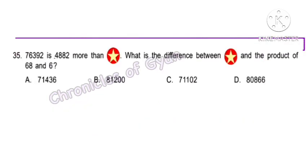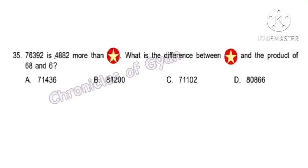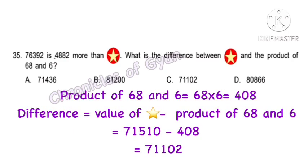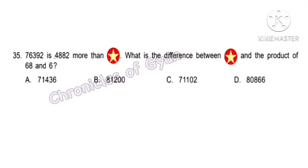Question 35 (Achiever). 76,392 is 482 more than ★. What is the difference between ★ and the product of 68 and 6? The value of ★ equals 76,392 minus 482 equals 71,910... First finding ★: 71,510. Product of 68 and 6 is 408. The difference is option C — 71,102.